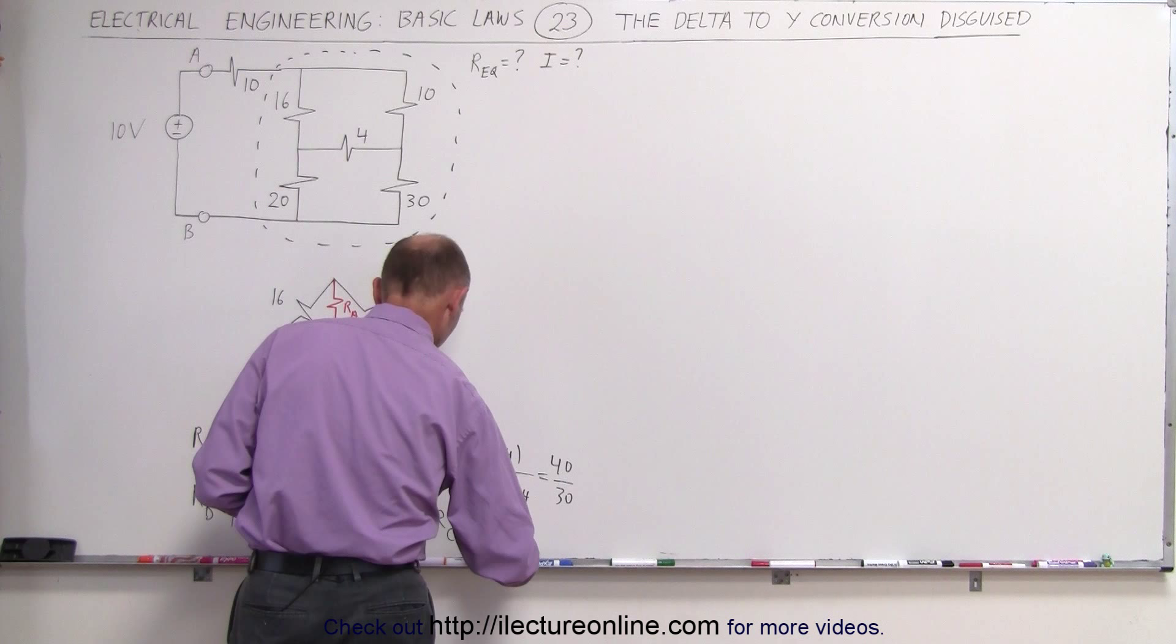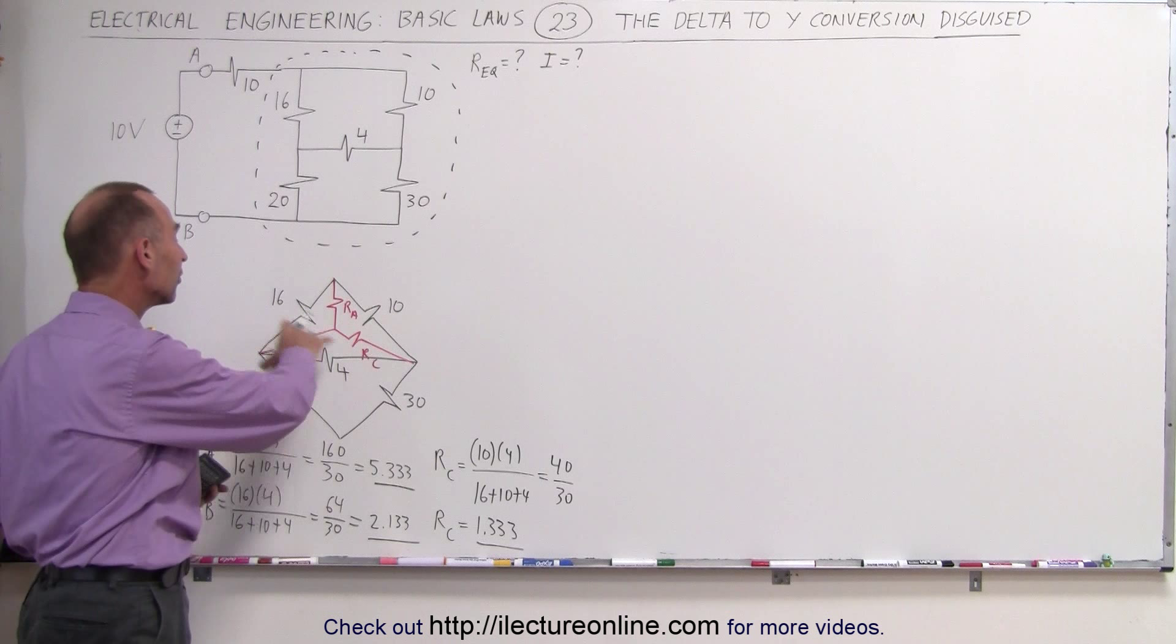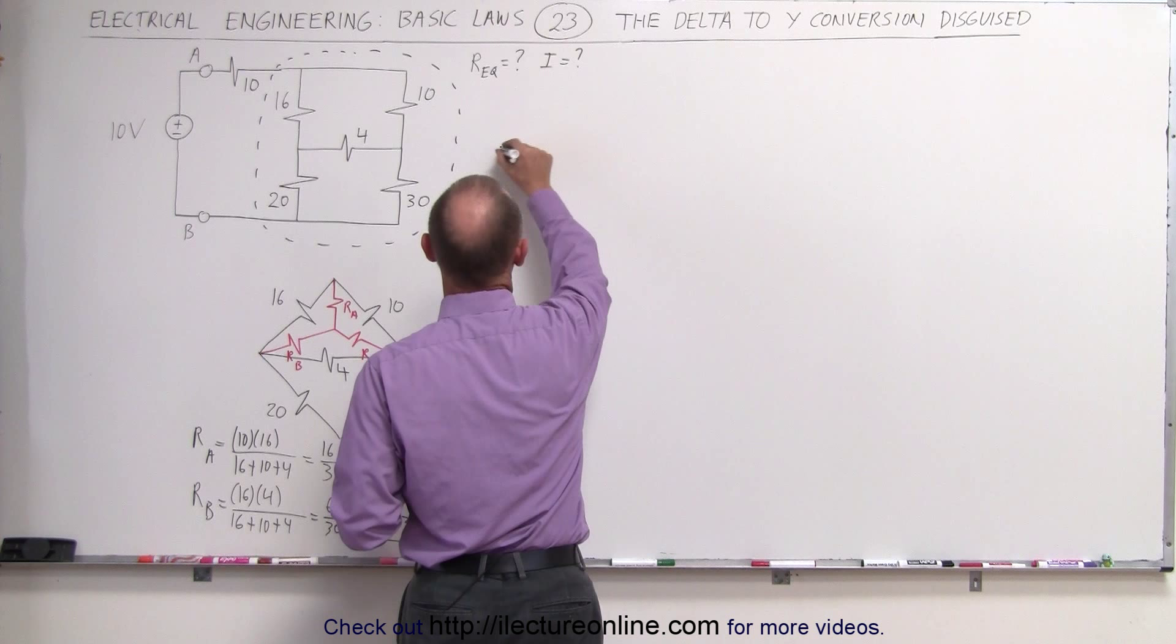So now we have the R sub A, the R sub B, and the R sub C values of those three resistors in the delta, or the Y equivalent of the top delta. I can now redraw the circuit as follows.